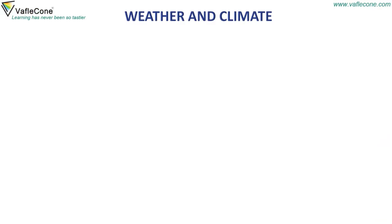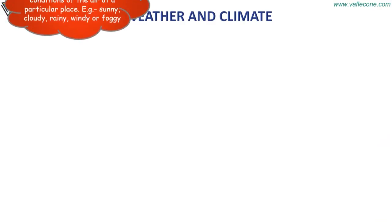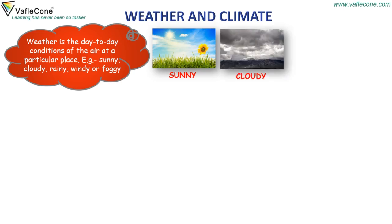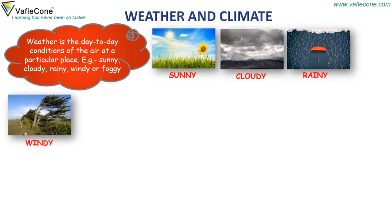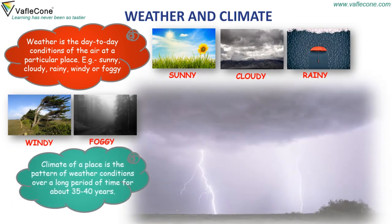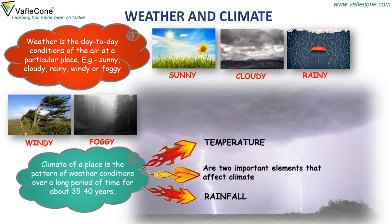Weather and climate. Weather is the day-to-day conditions of the air at a particular place. For example, sunny, cloudy, rainy, windy or foggy. Climate of a place is the pattern of weather conditions over a long period of time, for about 35 to 40 years. Temperature and rainfall are two important elements that affect climate.